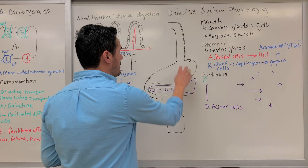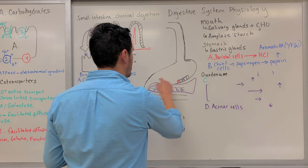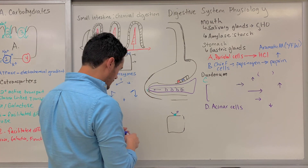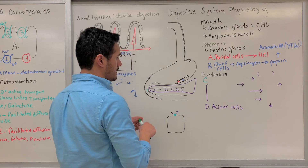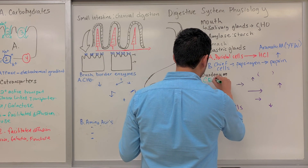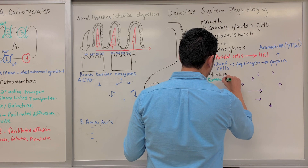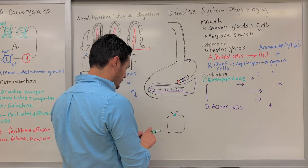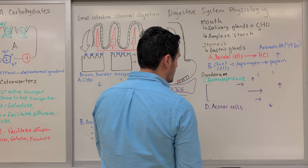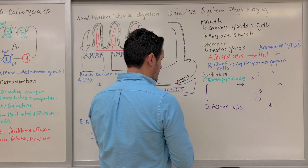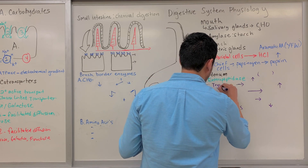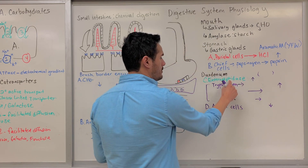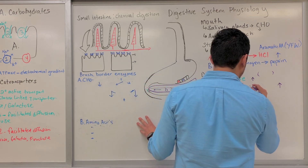Now that we have this acidic chyme mixture within the stomach, it gets into the duodenum. Within the duodenum, we have something called enteropeptidase. Enteropeptidase is responsible for activating what's known as trypsinogen. Trypsinogen is the inactive form, and we use enteropeptidase to cleave it into trypsin.